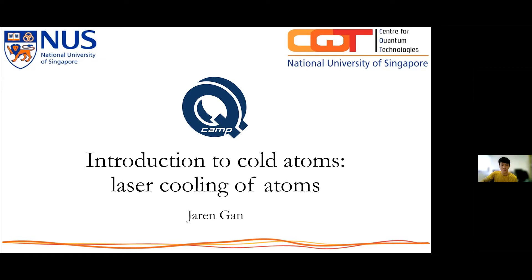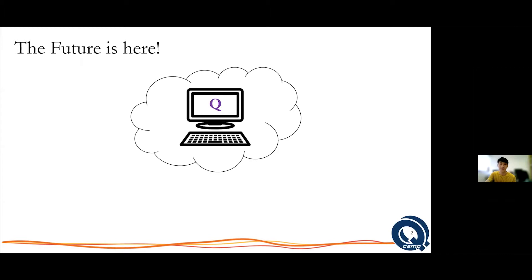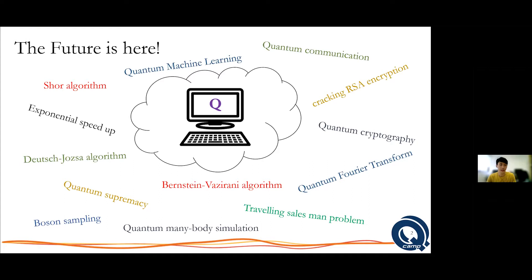Now we know that the future is here — this whole camp revolves around quantum computing and computation. We have all the fancy big names and big words coming out, like Shor's algorithm, because that's what kickstarted the whole revolution — some kind of exponential speed up — and then everybody is hooked onto it.